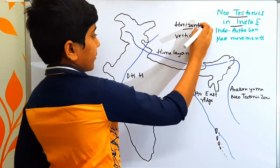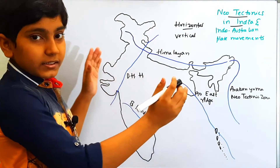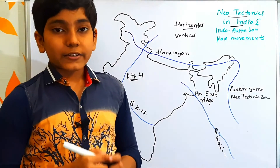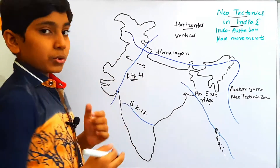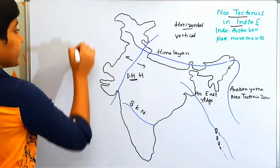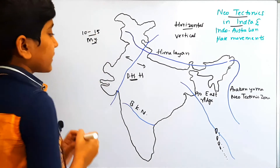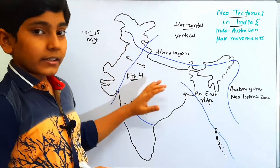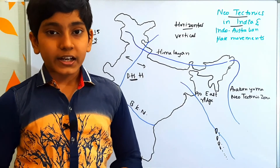Horizontal movement is the movement of India in a lateral direction. Here we have the Delhi-Haridwar-Harishil Ridge, at which India is having a divergent margin, where India would be diverging into two parts along this ridge. It takes approximately 10 to 15 million years for India to form a new ocean — called the Indo-China Ocean — between the northwestern part and the rest of India.